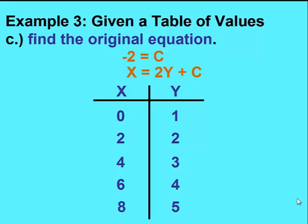So our equation would become x equals 2y minus 2. Now let's check to see if this works. We can substitute in our y value of 2. We get 2 times 2 is 4, minus 2 would have to equal 2 for x.